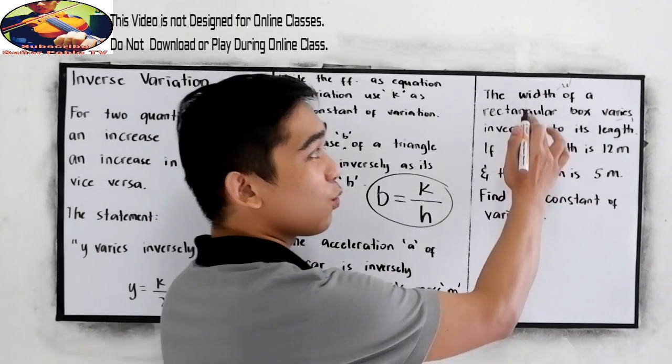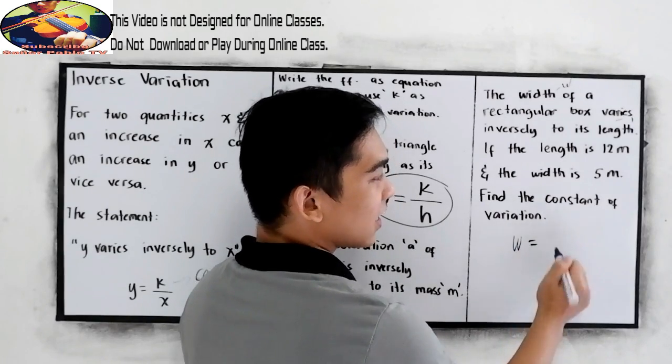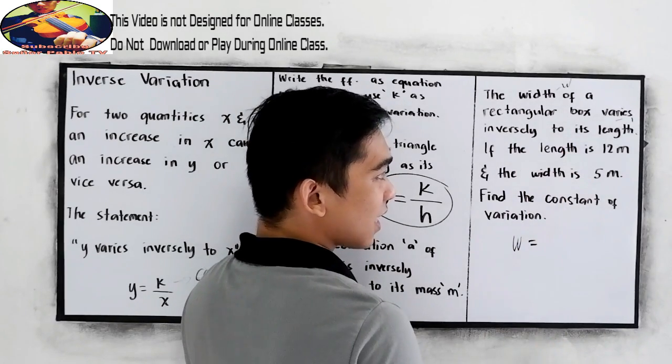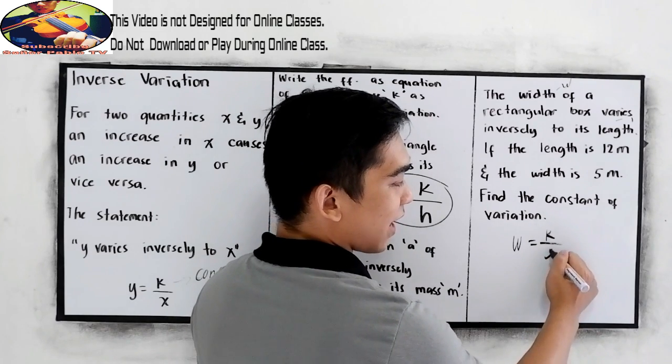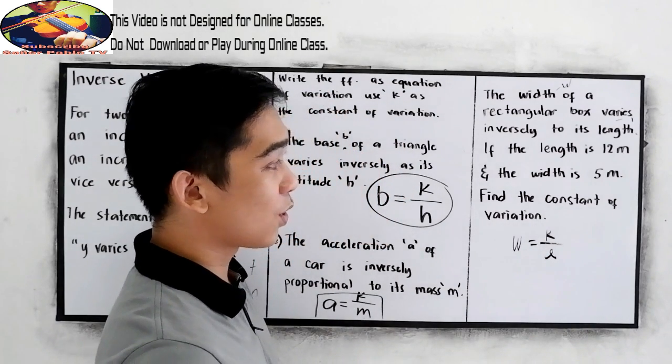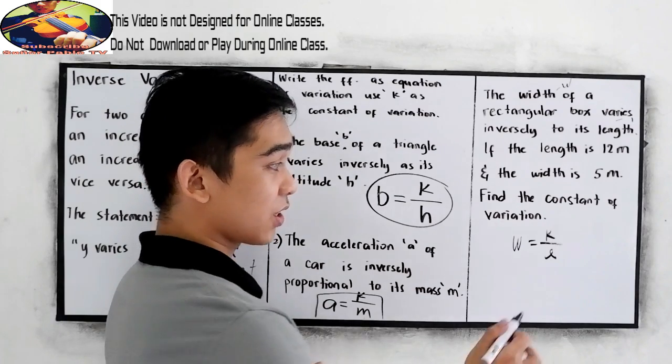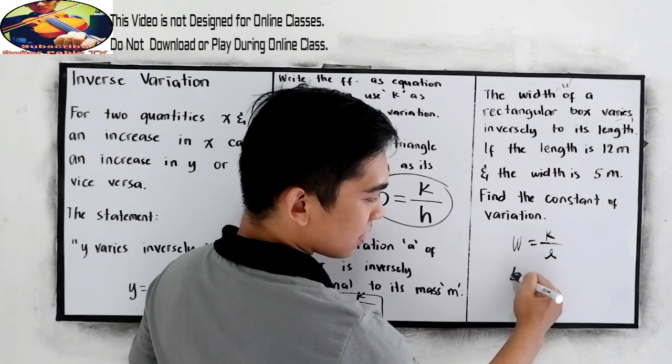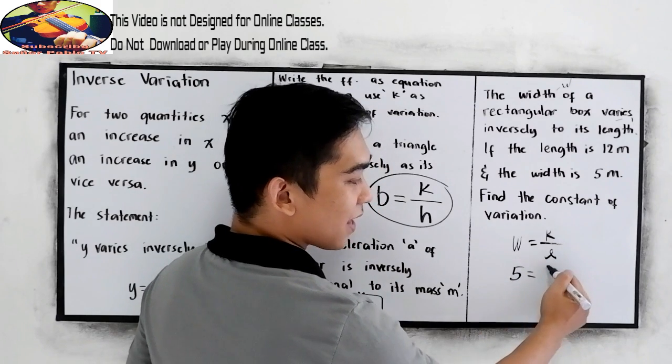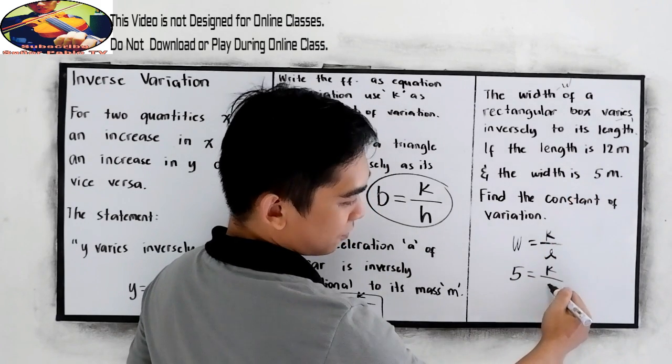So, width varies inversely as the length. So W equals K over L. We're going to find the constant of variation, the K. If the width is 5 and the length is 12 meters,